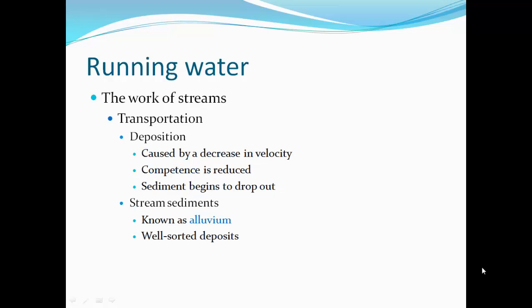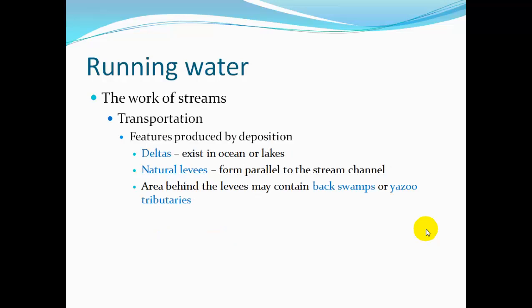As rivers slow down, they start dropping material — depositing sediment. As competence is reduced, it holds smaller particles, so larger ones drop out and land on the bottom of the channel. These sediments we call alluvium. They are well-sorted deposits — as you walk downstream, you'll see bigger chunks near the top and progressively smaller particles downstream, because the slowing velocity sorts things by size.